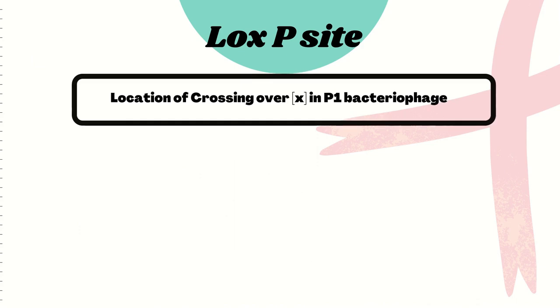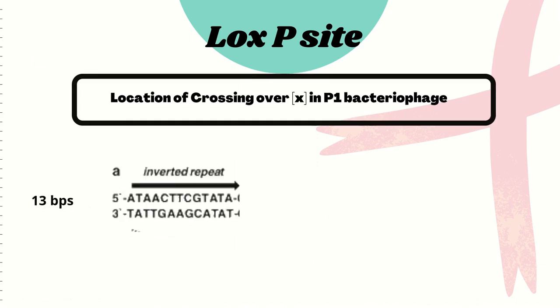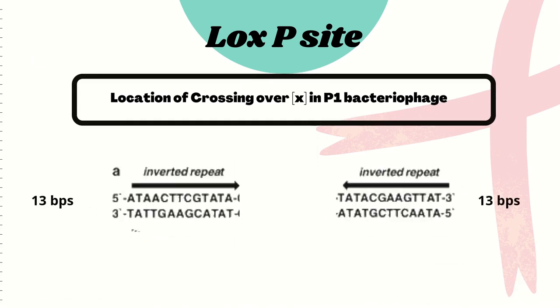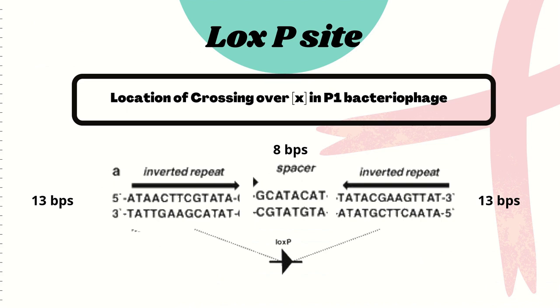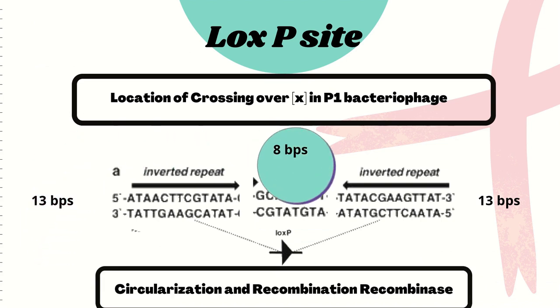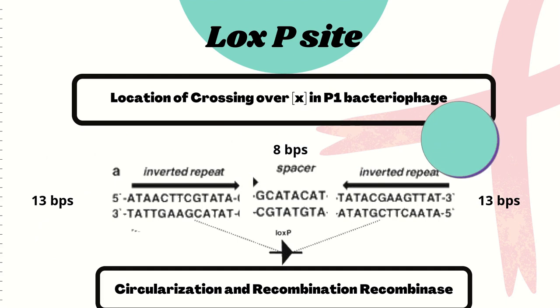The LOX P sites are specialized sites that consist of 13 base pair inverted repeats separated by an 8 base pair sequence. This 8 base pair central sequence is where the Cre recombinase binds and carries out its catalytic activity.